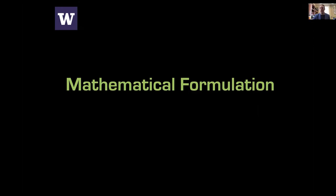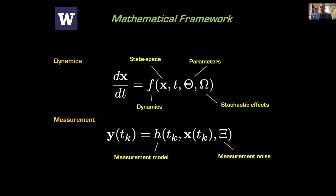Now let's get to the mathematical formulation. I have some dynamics and measurements of that dynamics. The measurement Y(t_k) is what I have access to — I measure at discrete time points some version of X through a measurement model I don't necessarily know. I have noise. I'm trying to measure some dynamical system where I don't know the dynamics prescribed by F, don't know the state space X or its parameters. From measurements alone, I want to discover H, F, theta, and dx/dt = F.